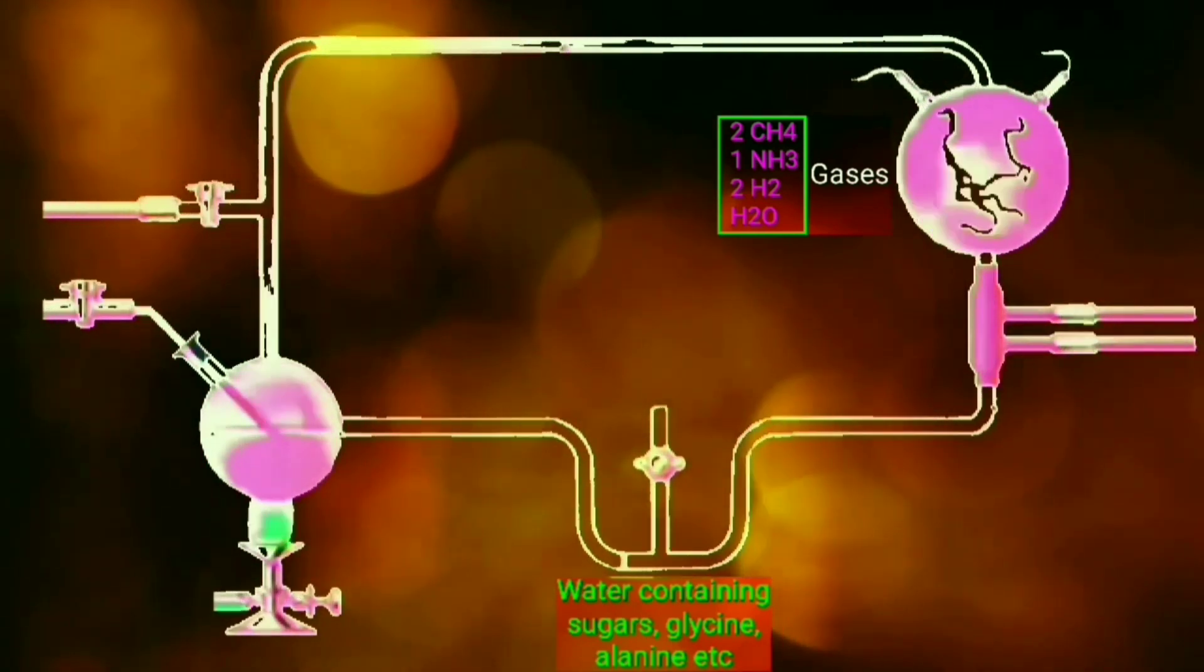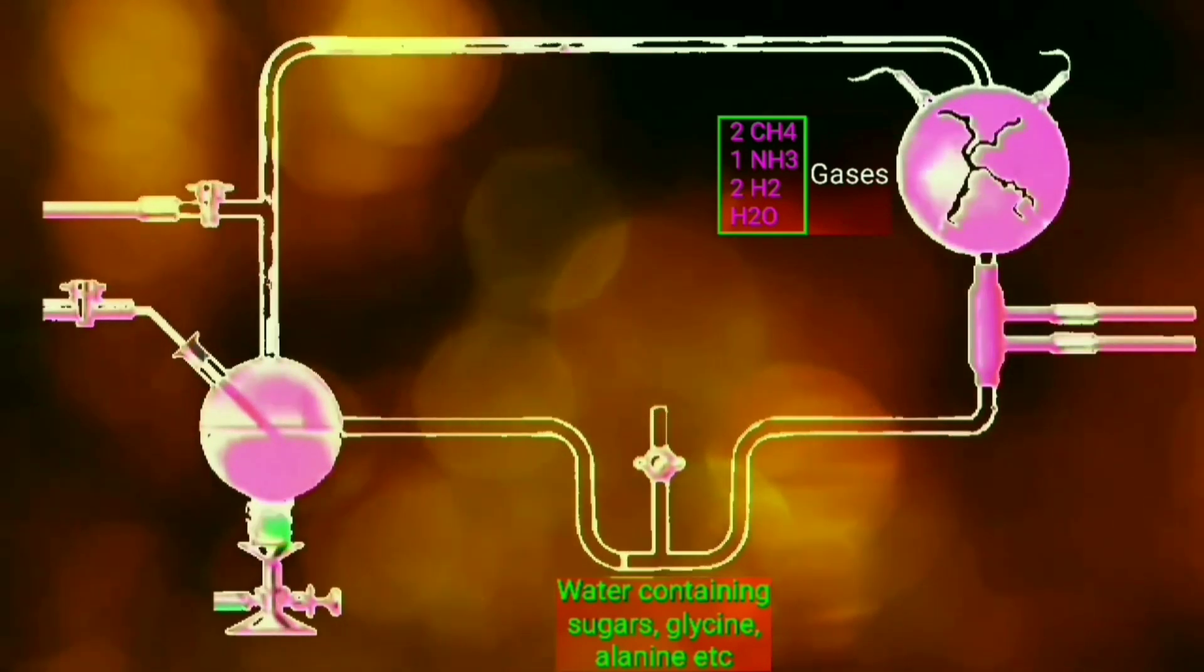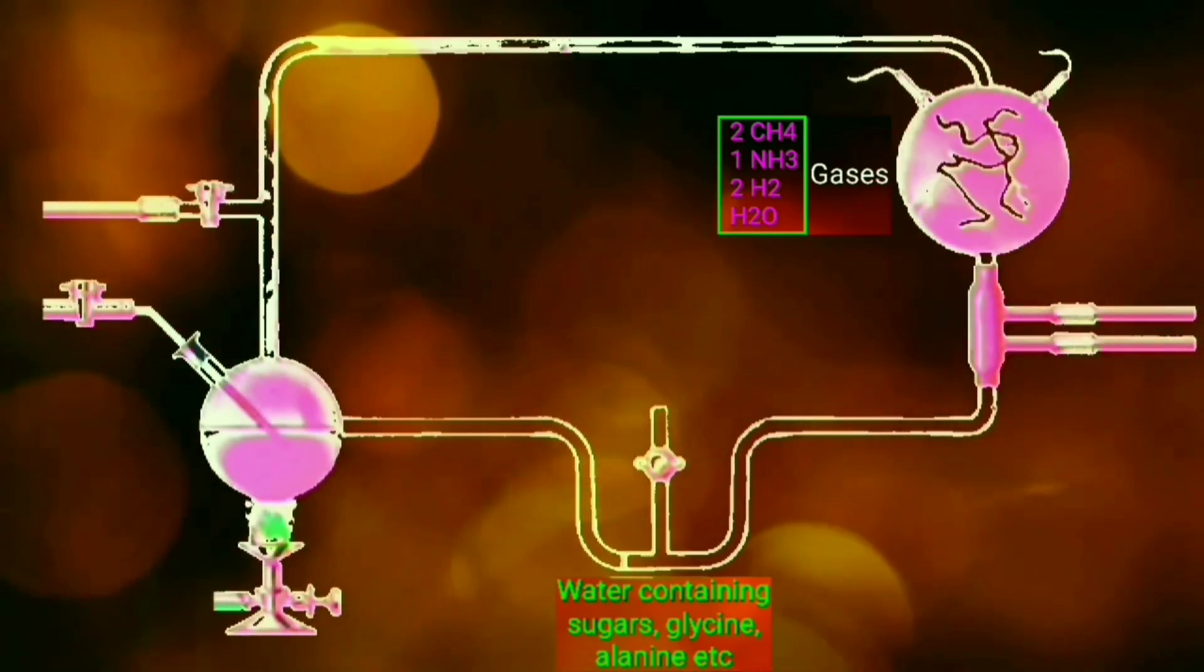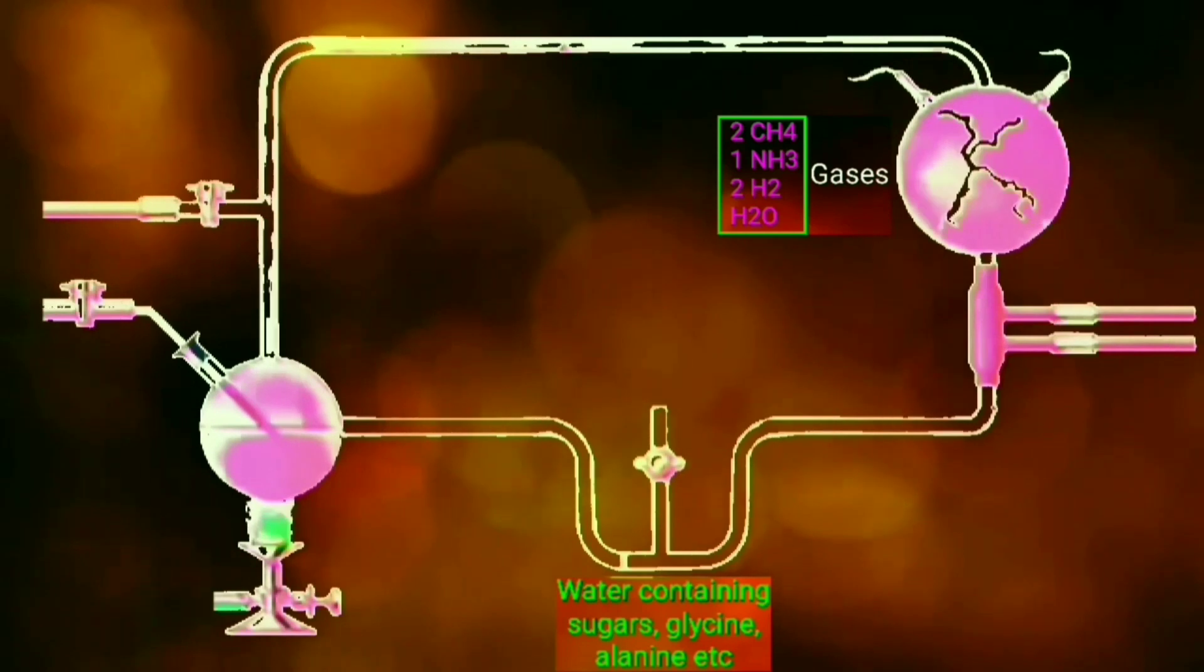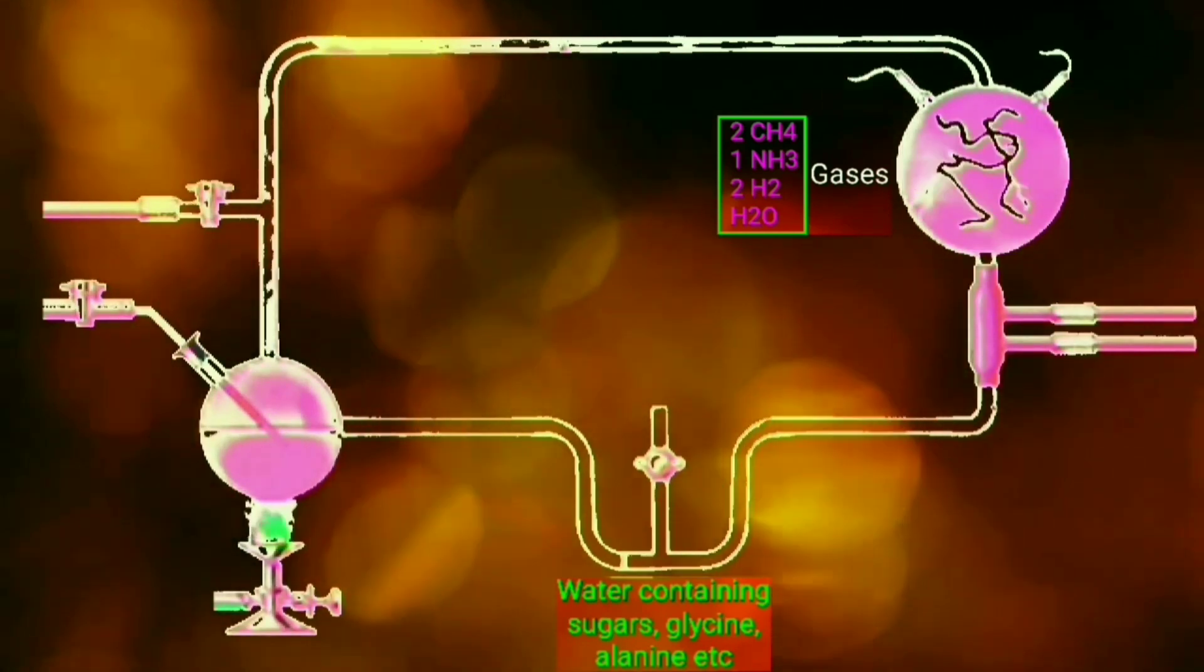And some pentose, hexose, aldehydes, and ketones, etc. These substances were found in the dark red fluid that was trapped in the U-trap.